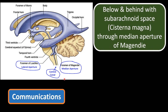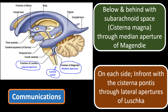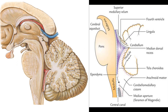Below and behind, the fourth ventricle communicates with the subarachnoid space — called the cisterna magna — through a foramen called the foramen of Magendie. On each side in front, it communicates with the cisterna pontis through the lateral apertures of Lushka — right and left lateral apertures. The cisterna magna is the largest cistern, also called the cerebellomedullary cistern.